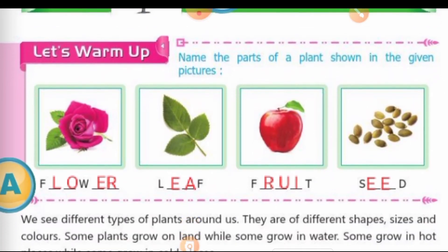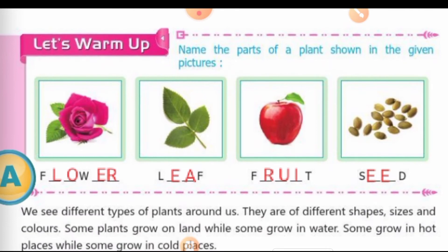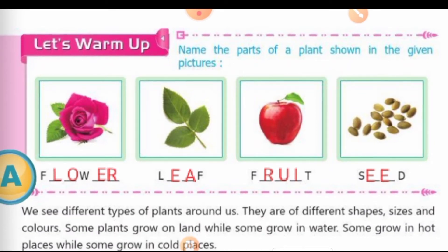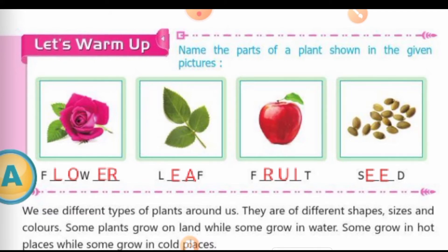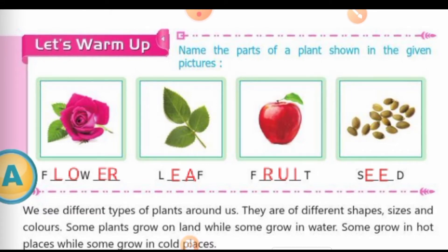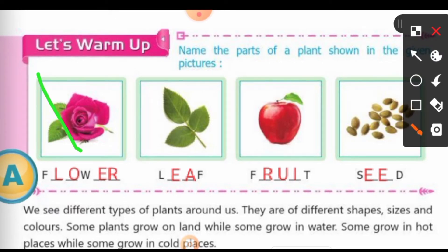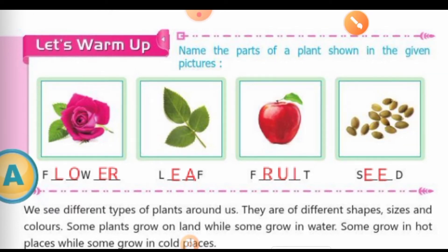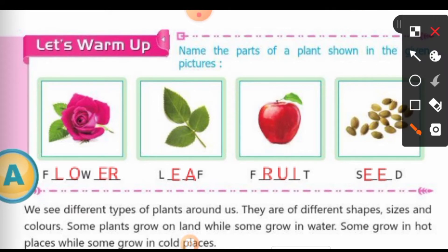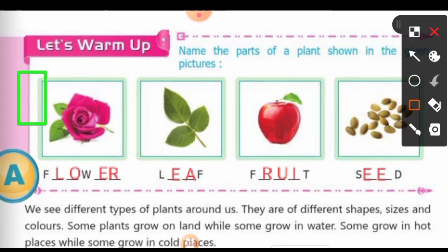So let's start this chapter with this question: Name the parts of a plant shown in the given picture. Jahaan par kush plant ke parts dey gaya hai, jinkai name aapko write karne hai. First is flower and second is leaf, third is fruit and fourth is seed.